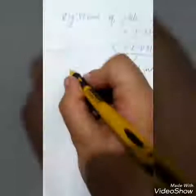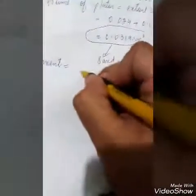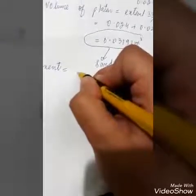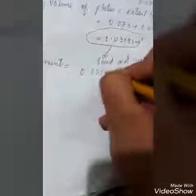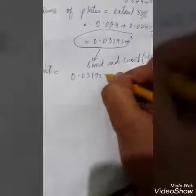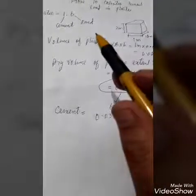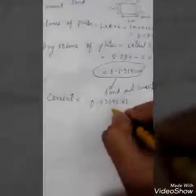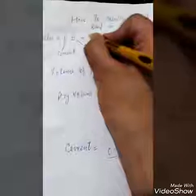Now how to find the quantity of cement. To find the quantity of cement, we take the dry volume of plaster which is 0.03192. The ratio is 1 is to 6, so we have 1 part cement. We multiply by 1 and divide by the sum of the ratio parts, which is 6 plus 1 equals 7. That gives us 0.00456 cubic meters of cement.